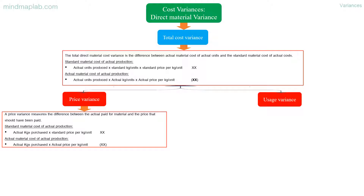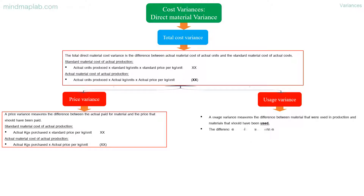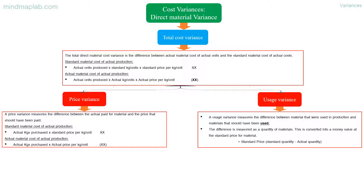Usage variance: a usage variance measures the difference between materials that were used in production and materials that should have been used. The difference is measured as a quantity of materials and is converted into a money value at the standard price for material. Usage variance is calculated as: standard price multiplied by the difference between the standard quantity and actual quantity.